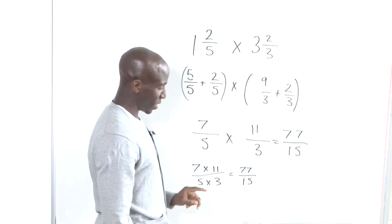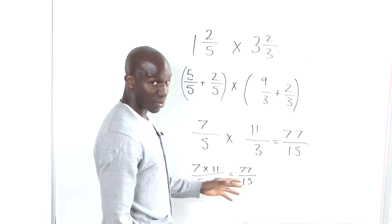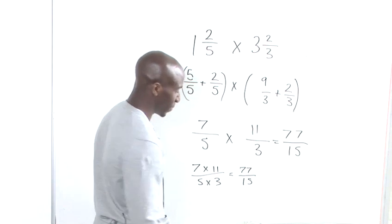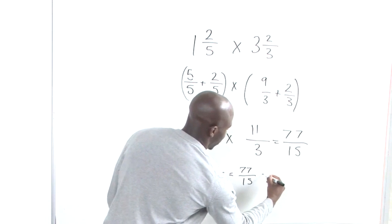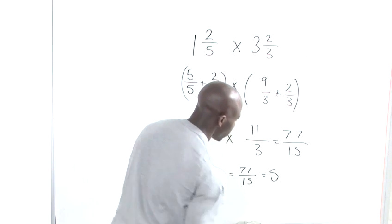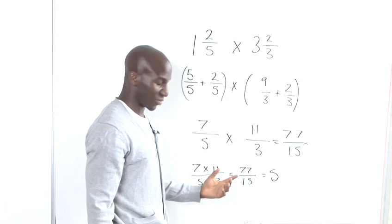Straight off the top of my mind, I know it's 5 because 5 times 15 equates to 75. So we say that 15 goes into 77 five times and we get left with a remainder of 2. But that remainder of 2, we still want to divide that by 15.